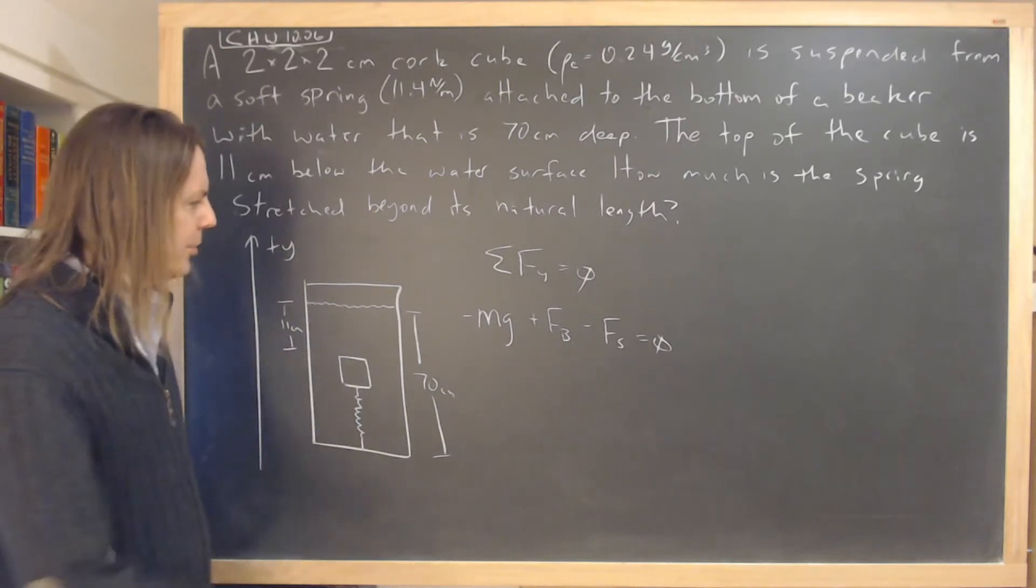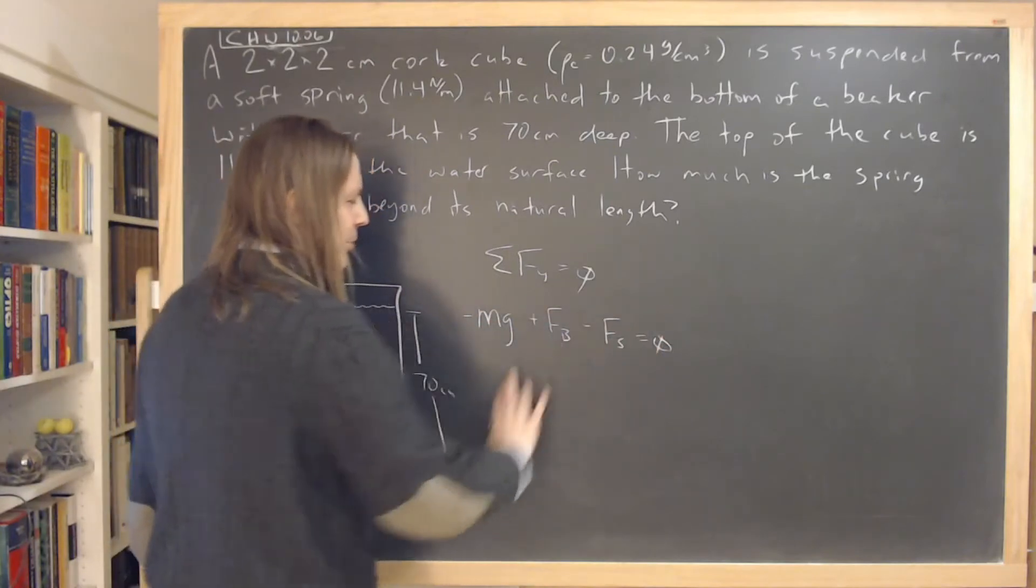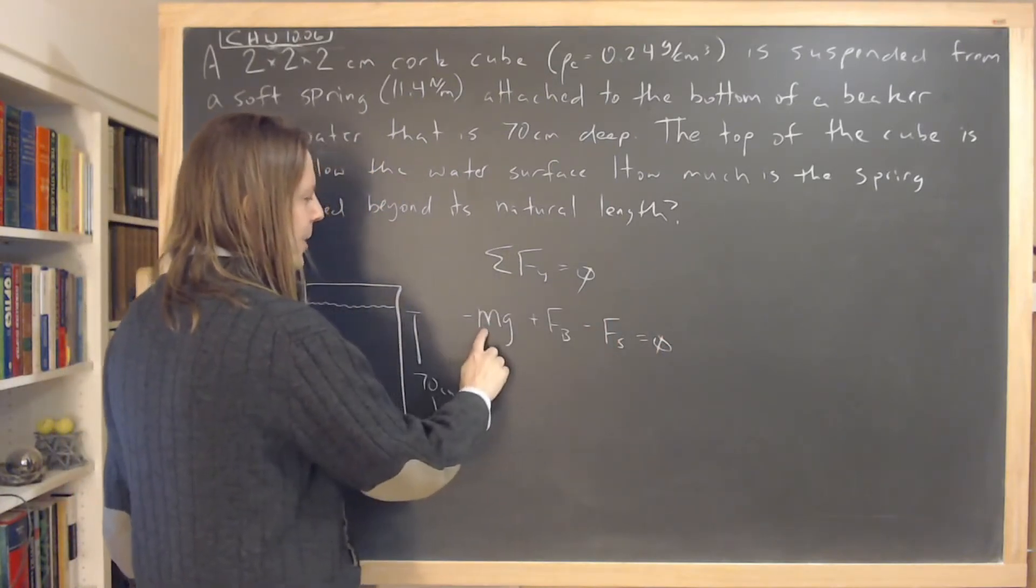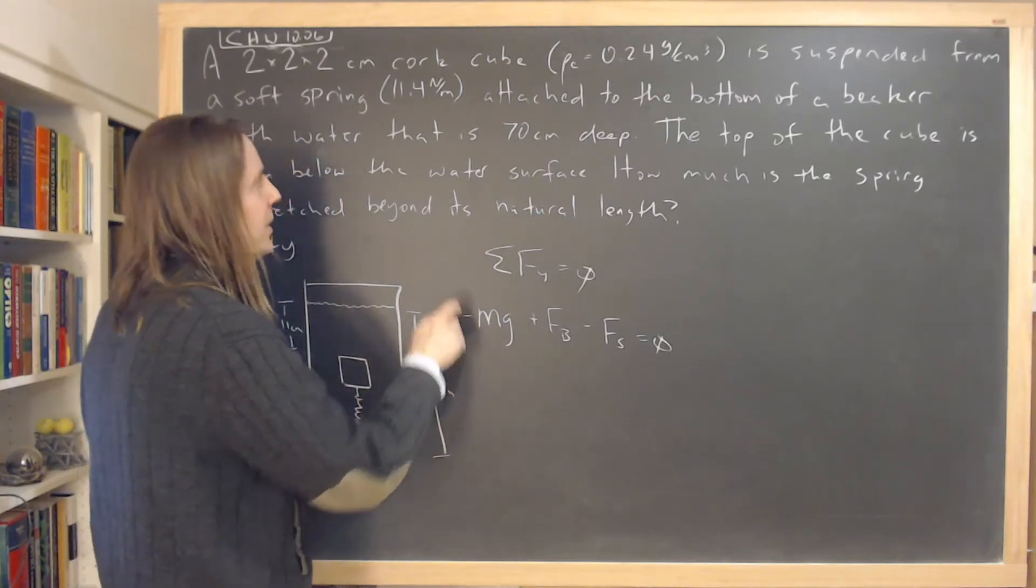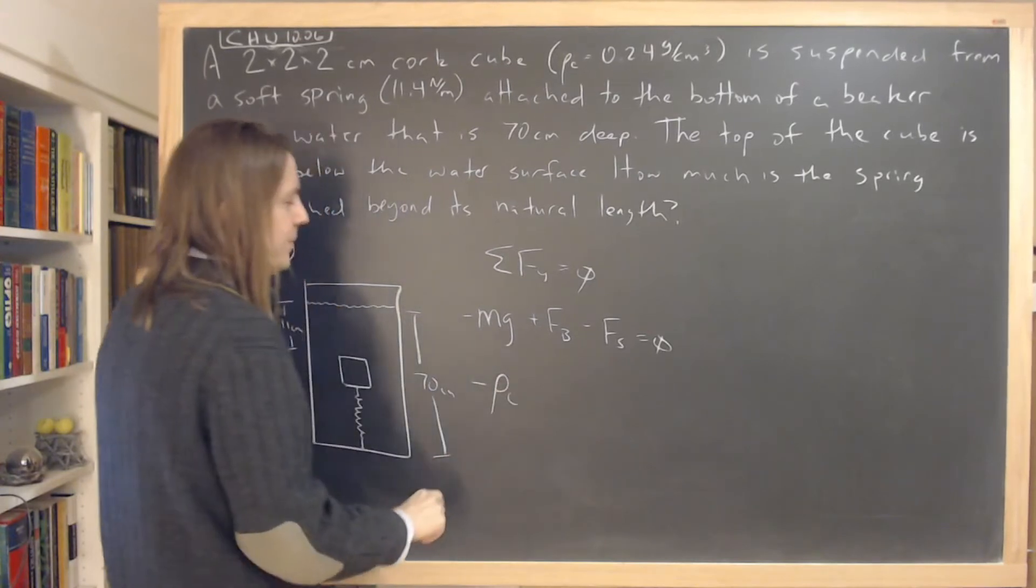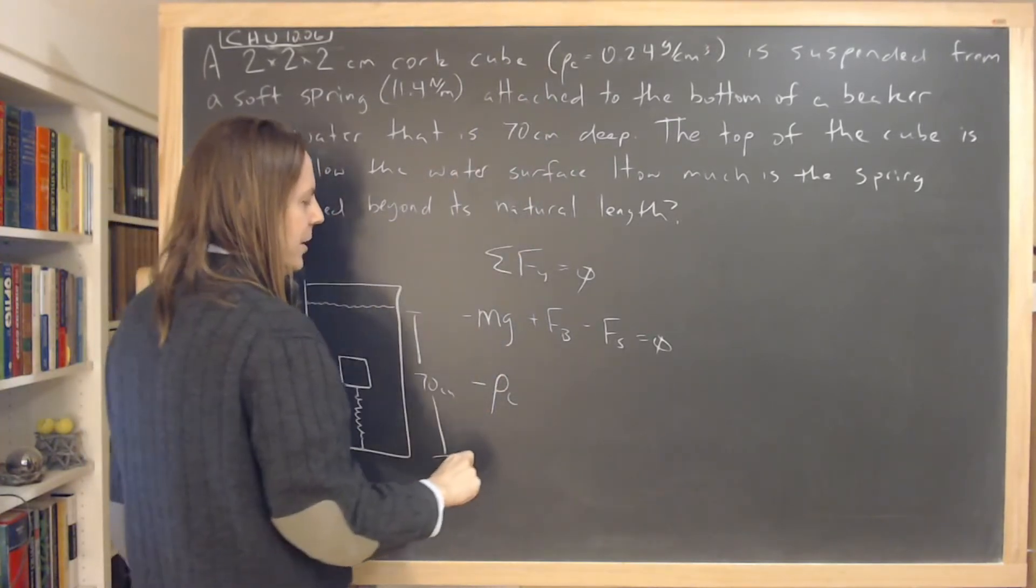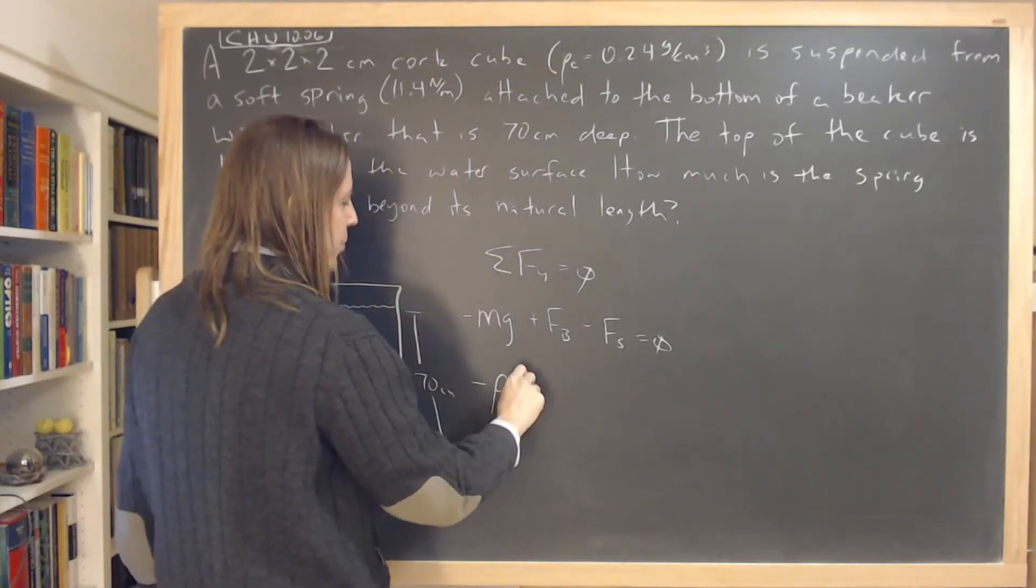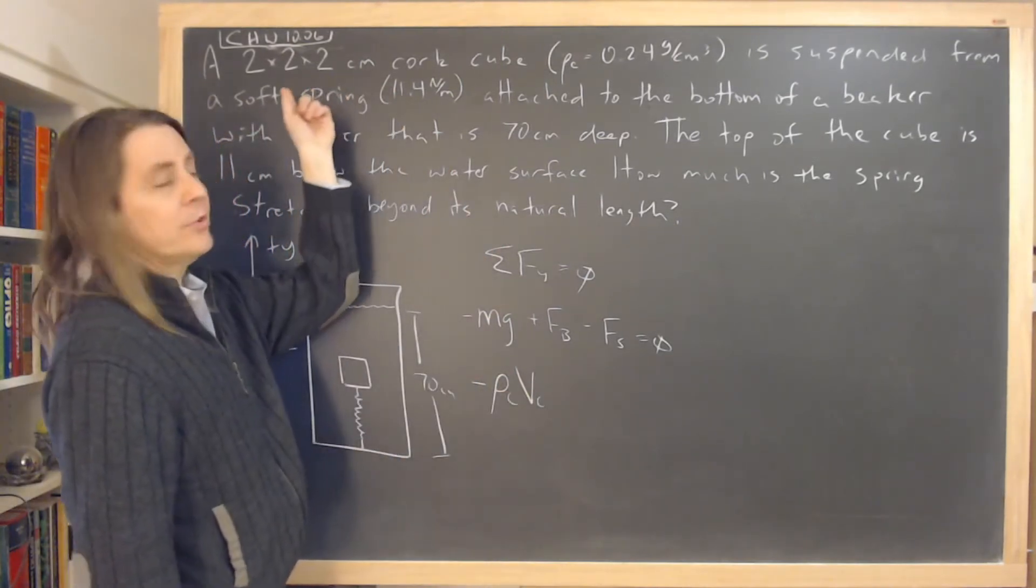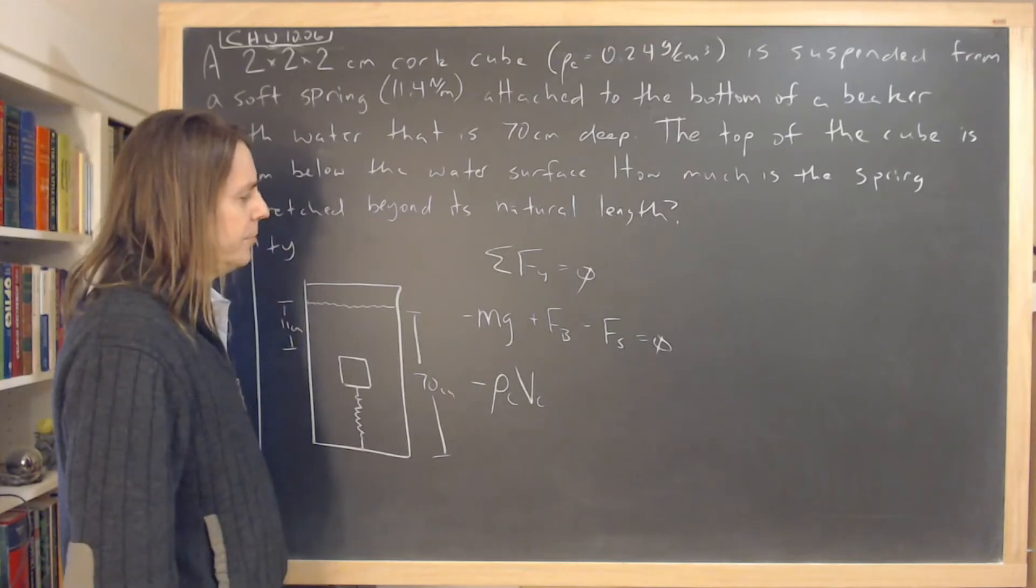So here we go. Let's start plugging in. And let's keep with symbols for a minute so we can see the way some things combine here. So the mass of the cork cube, we could actually go ahead and just write it as the density of the cork times the volume of the cork, which we will be able to get because we know it's 2 by 2 by 2, times g.